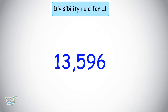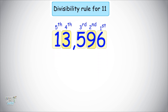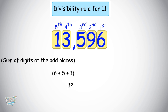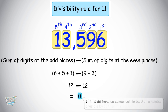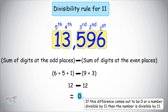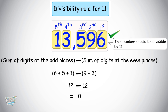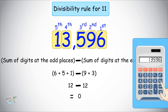Here we have another number: 13,596. First, mark the positions from the right: 1, 2, 3, 4, and 5. Sum of the digits at the odd places — the 1st, 3rd, and 5th positions — is 6 plus 5 plus 1 equals 12. Sum of the digits at the even places — the 2nd and 4th positions — is 9 plus 3 equals 12. The difference is 12 minus 12 equals 0. Our rule says the difference comes out to be 0 or a number divisible by 11, so the number is divisible by 11. 13,596 divided by 11 is 1,236. So yes, it is divisible by 11.